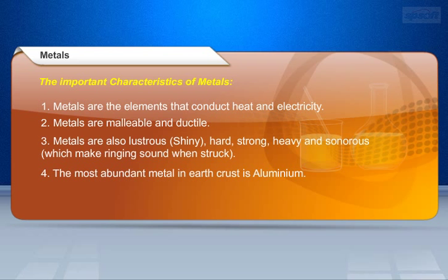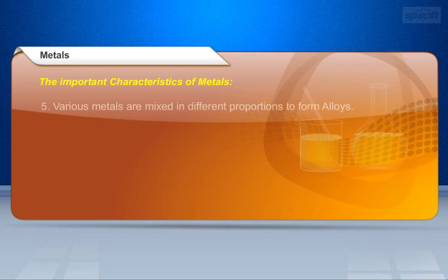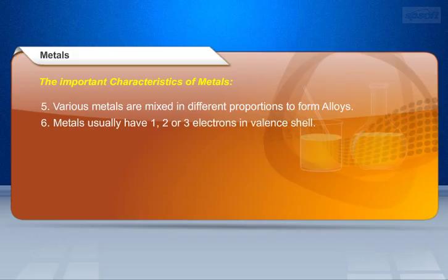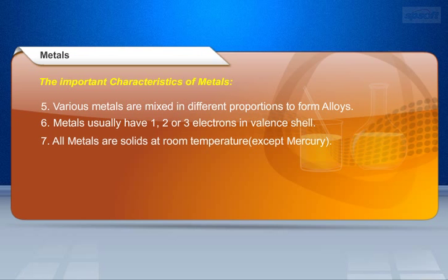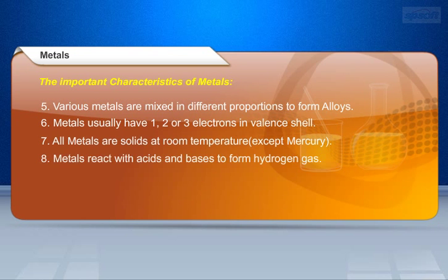The most abundant metal in the earth's crust is aluminium. Various metals are mixed in different proportions to form alloys. Metals usually have 1, 2, or 3 electrons in the valence shell. All metals are solids at room temperature, except mercury. Metals react with acids and bases to form hydrogen gas.